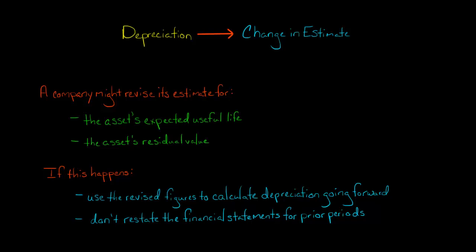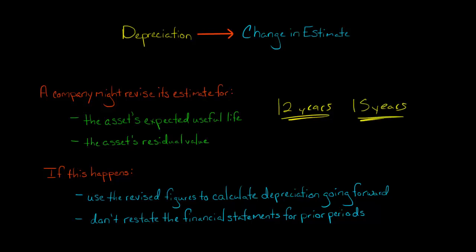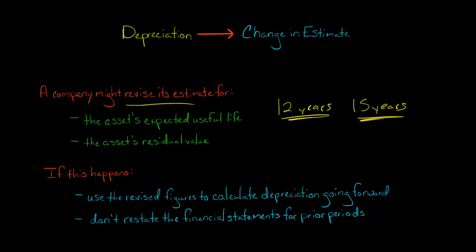A company might revise its estimate for the expected useful life of an asset. For example, a company might purchase equipment and think it's going to last for 12 years, but later decide that the estimated useful life is going to be 15 years. Also, the company might revise its estimate for the asset's residual value, also known as the salvage value — that's the value the asset is expected to have at the end of its useful life when you're done depreciating it.